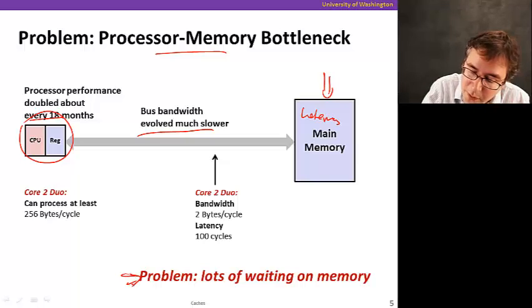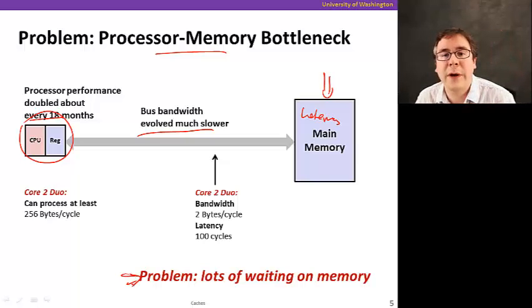So ultimately, the big problem is that there will be lots of waiting on memory. The processor does not like to wait. If they're waiting, they're wasting time. It hurts performance. But because memory didn't get as fast, didn't get fast enough compared to the processor, they'll be waiting. So how do we solve this problem?